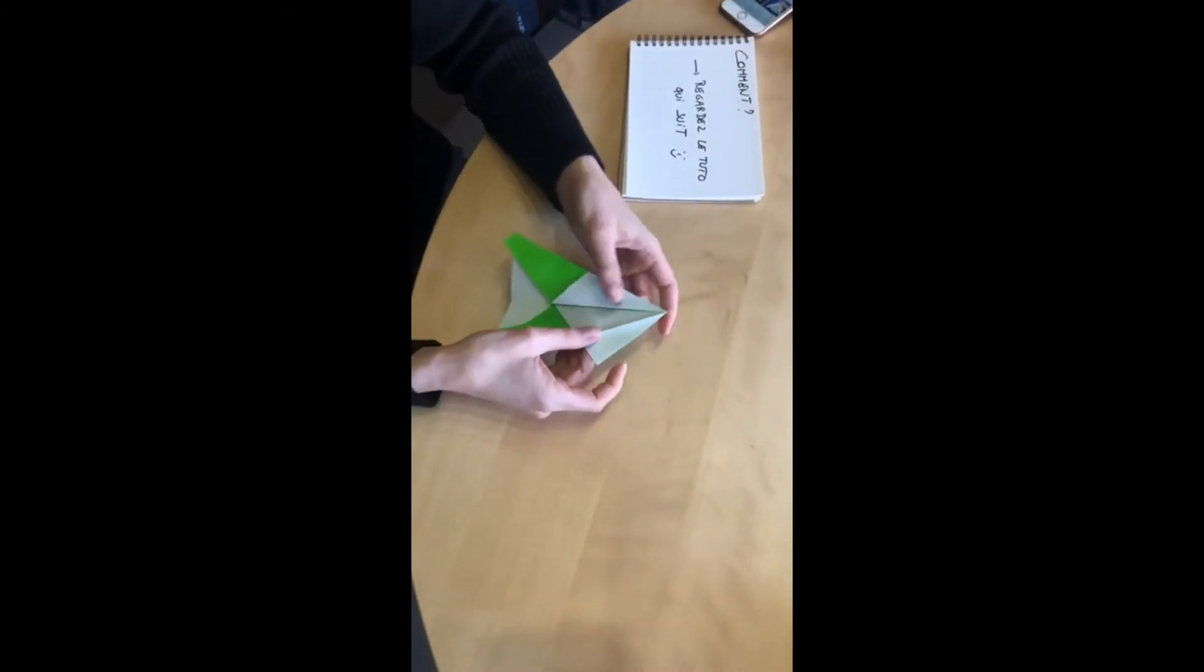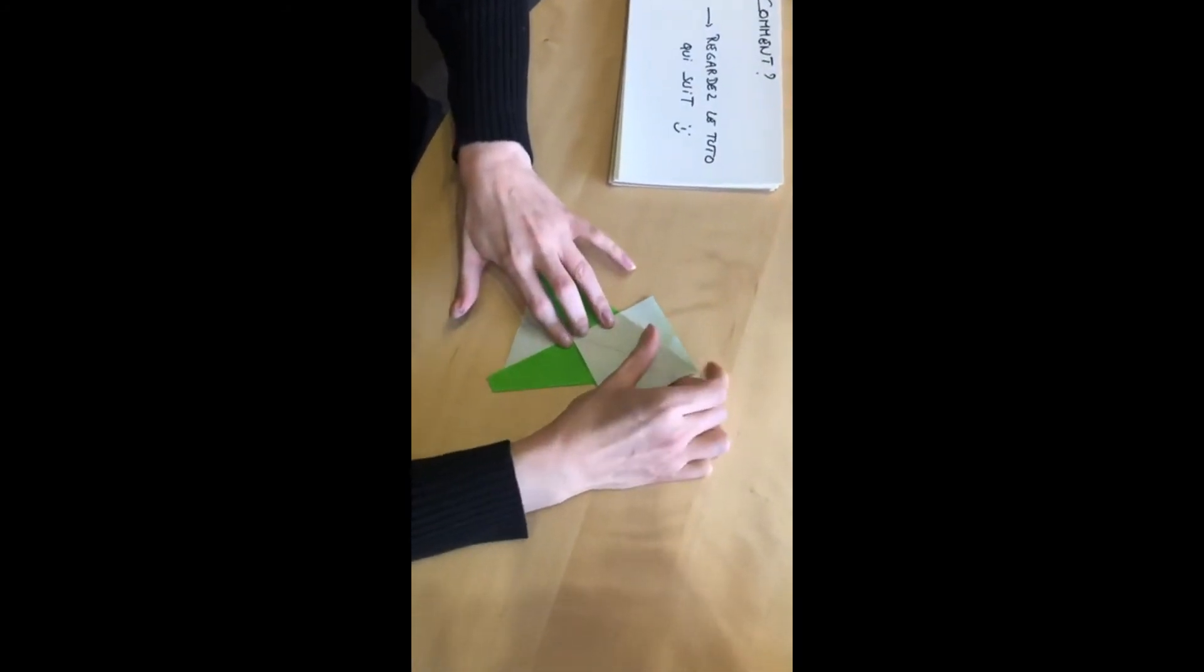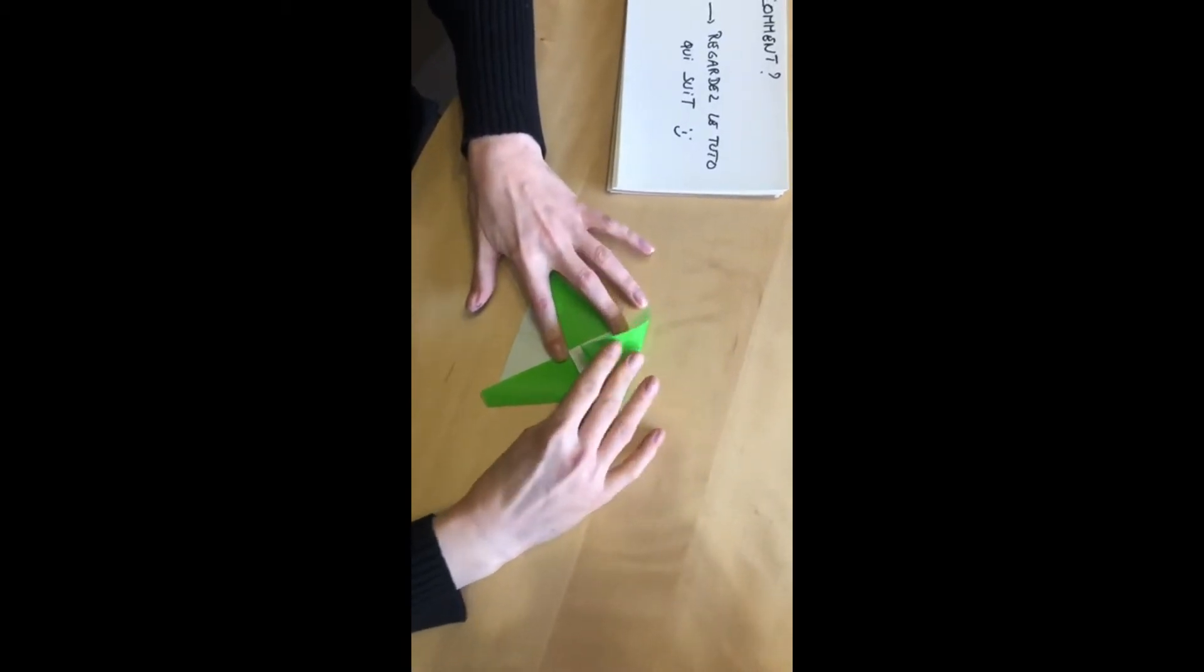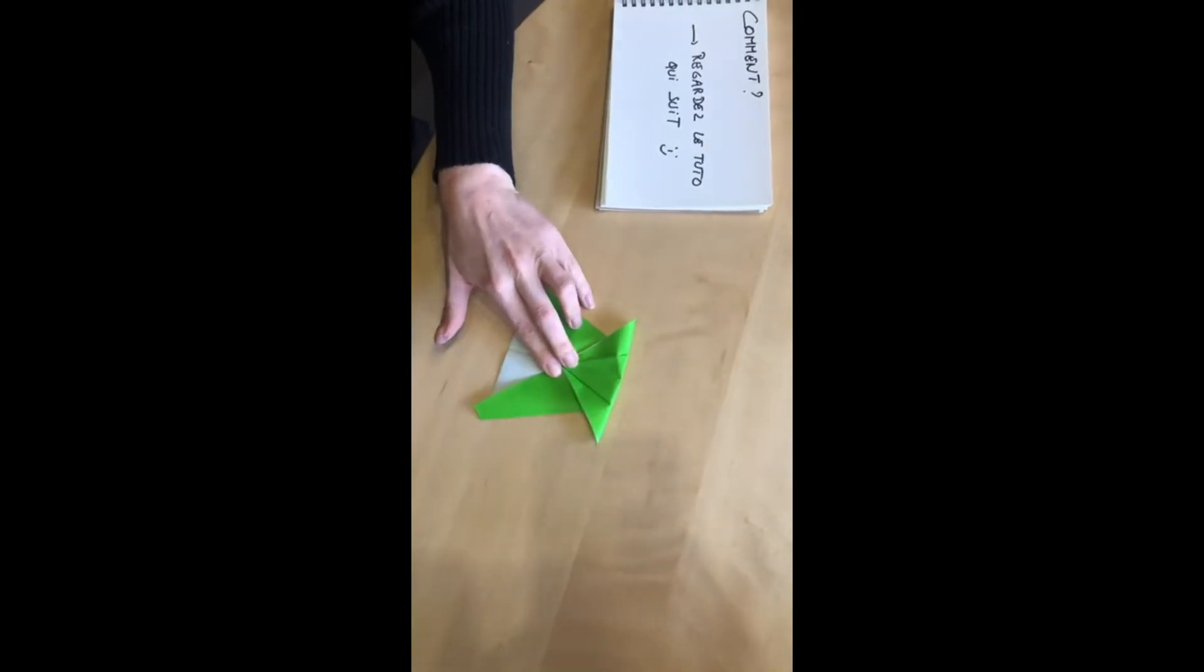On déplie juste les petits rebords et on va venir plier la pointe supérieure sur la base du losange, comme ceci.